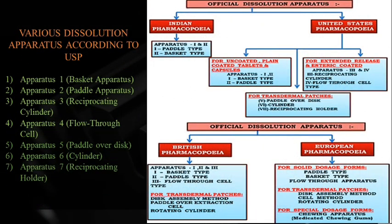Various dissolution apparatus according to USP: Apparatus 1 is basket, Apparatus 2 is paddle, Apparatus 3 is reciprocating cylinder, Apparatus 4 is flow-through cell, Apparatus 5 is paddle over disc, Apparatus 6 is cylinder, Apparatus 7 is reciprocating holder. According to Indian Pharmacopoeia, Apparatus 1 is paddle type and Apparatus 2 is basket type — opposite to USP. USP Apparatus 1 and 2 are used for uncoated, plain coated tablets and capsules.